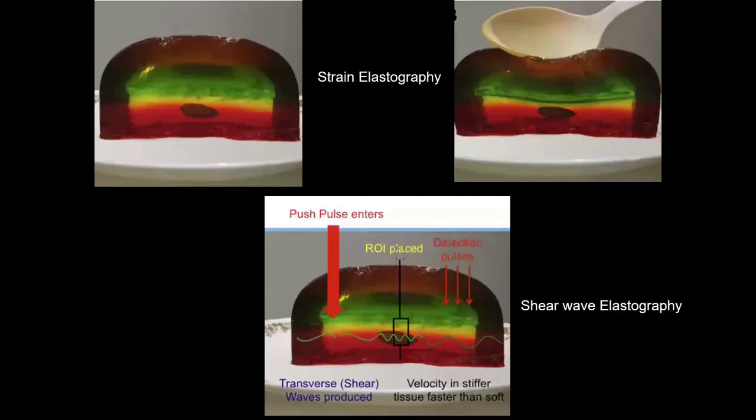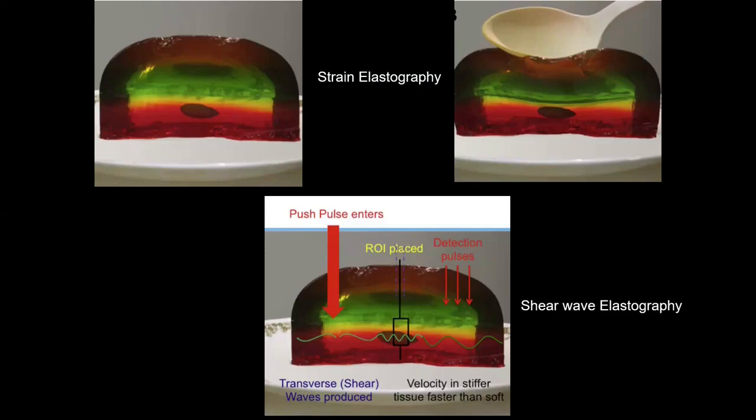The propagation of shear waves is faster in stiff or hard tissues and slower in soft tissues. In strain elastography, it's a direct compression of the tissue, and according to the deformity of the tissue, we infer the stiffness. With shear wave elastography, we send in shear waves and push them in, and depending on the changes in velocity, we determine whether the tissue is stiff or not.